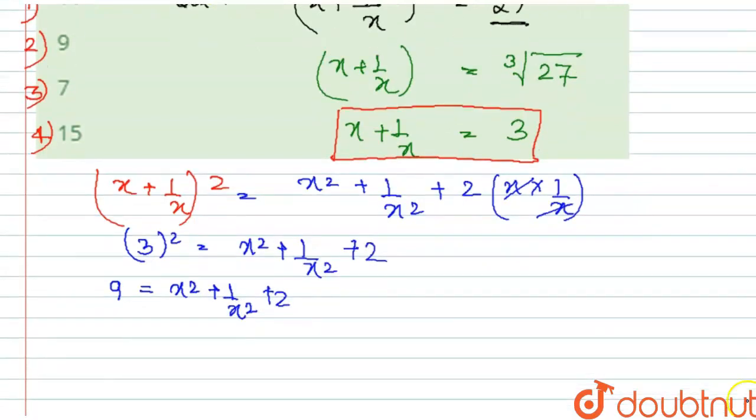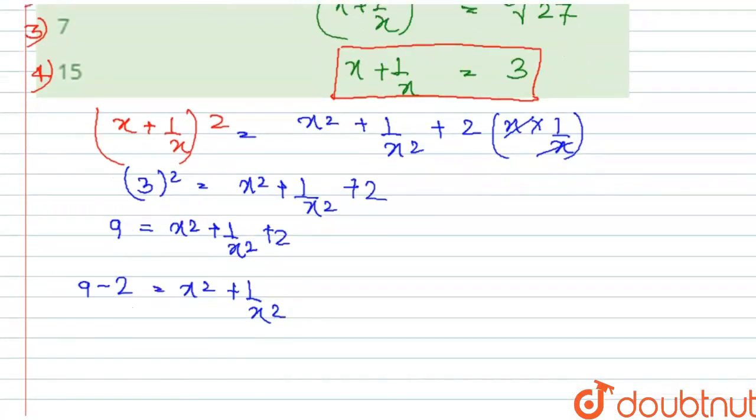Then 9 minus 2 equals x square plus 1 by x square. This implies that x square plus 1 by x square is equal to 7.